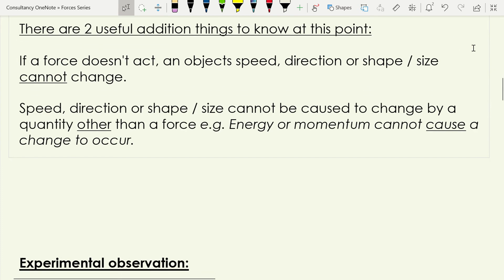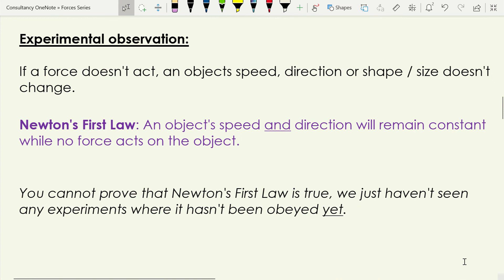Physics is all based on experimental observations — we've done tests, seen results, and drawn conclusions. We have observed that if no forces act, an object's speed, direction, or shape doesn't change. This is where Newton's First Law comes from. Newton's First Law says: an object's speed and direction will remain constant while no force acts on that object. Pause the video to write that down if you need to.